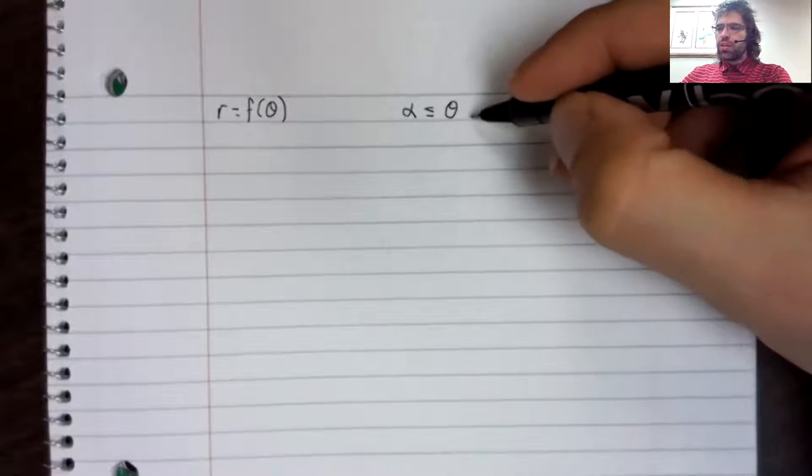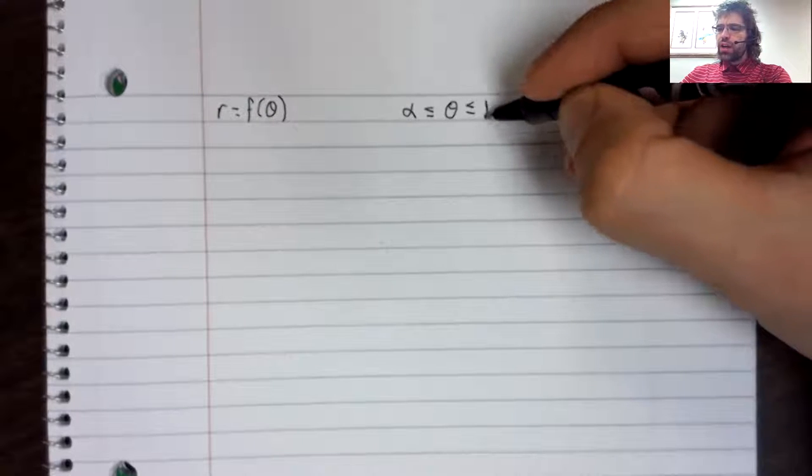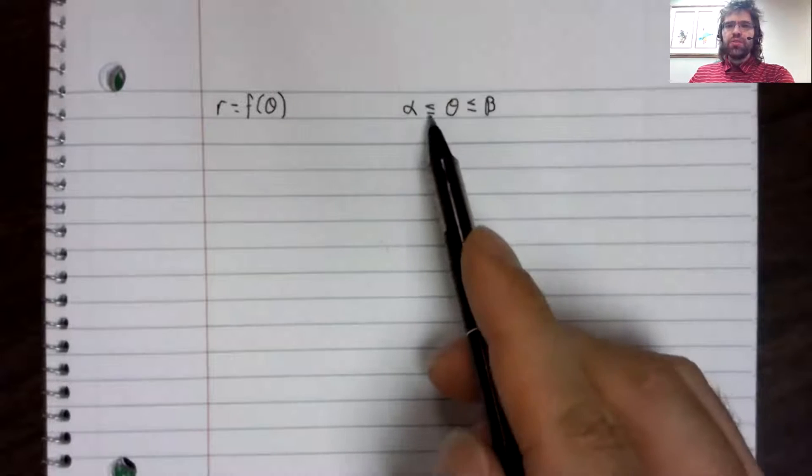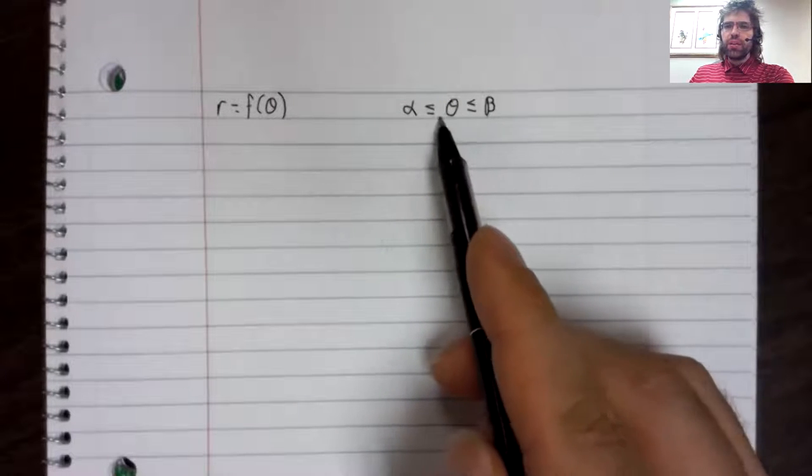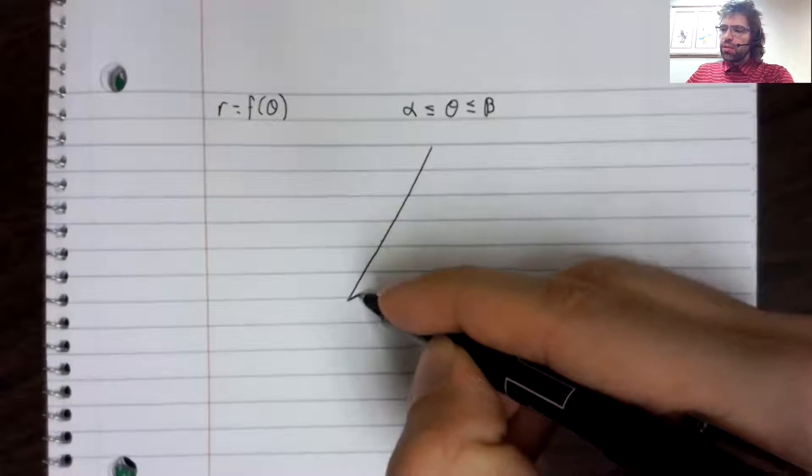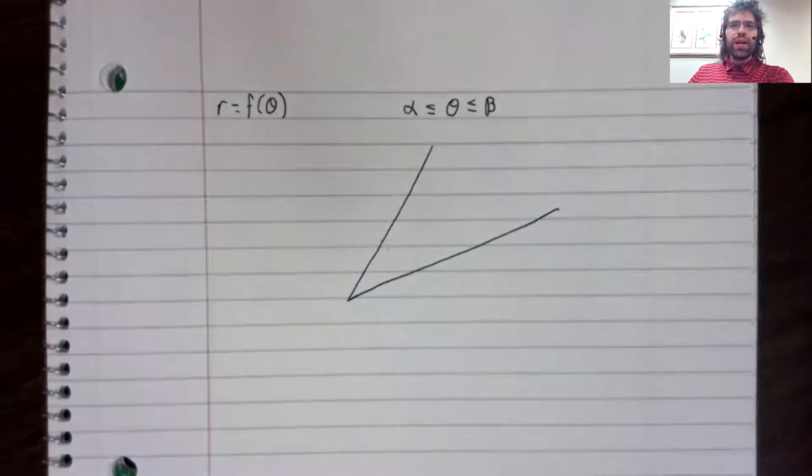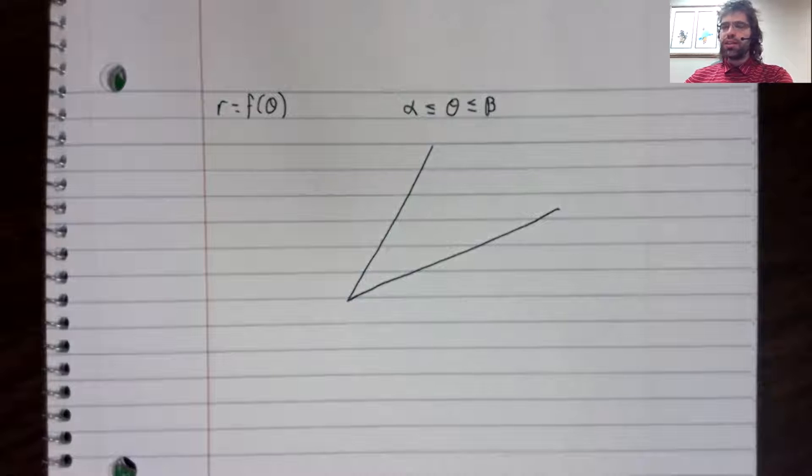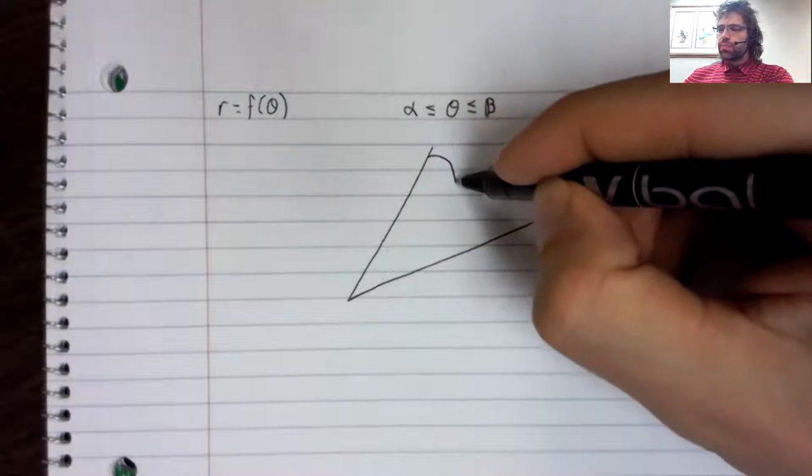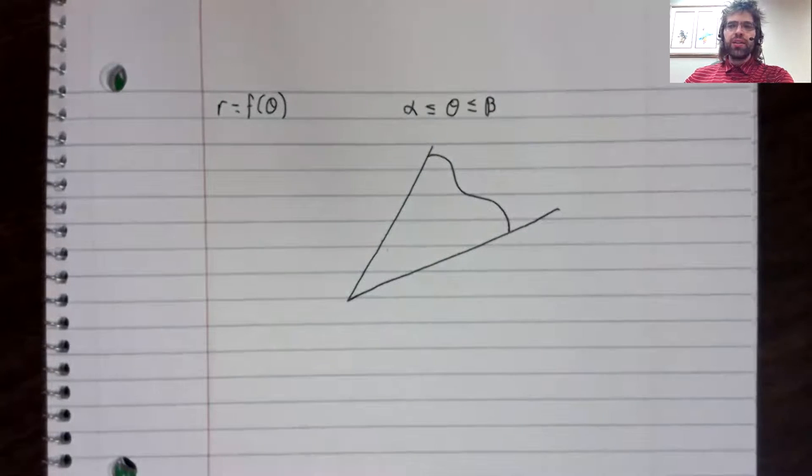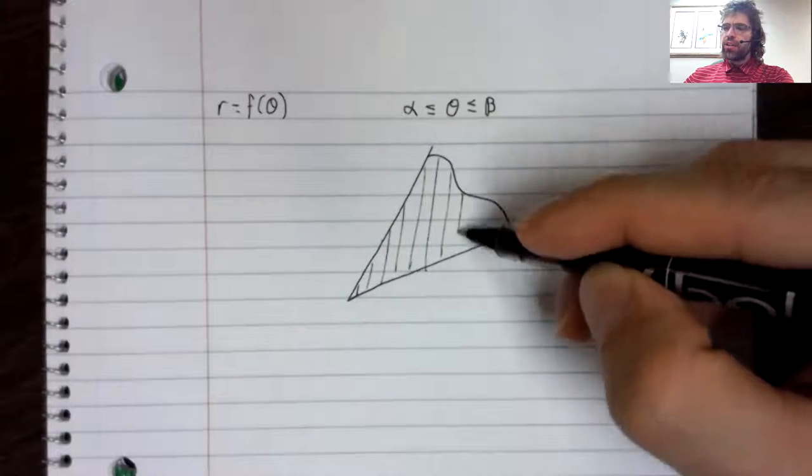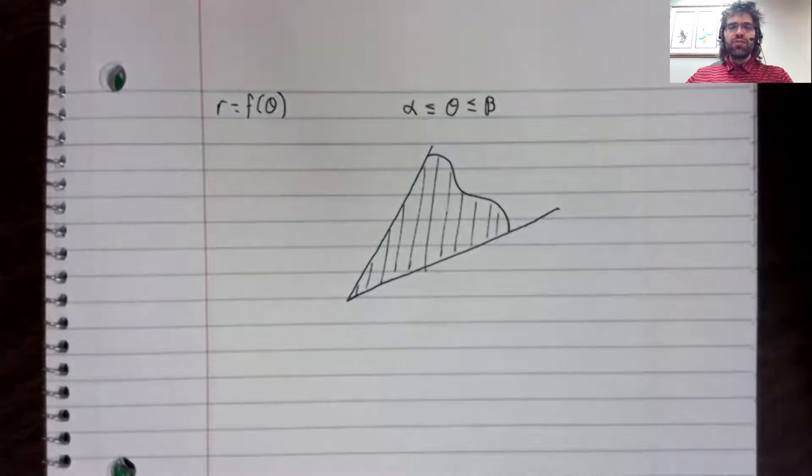And theta is defined on some closed interval. This inequality, theta is between alpha and beta, gives you a cone like that. And R equals F of theta gives you some kind of curve. And we are going to find the area of this region.